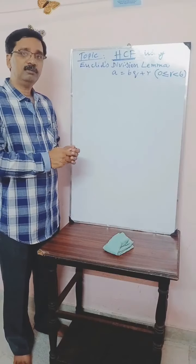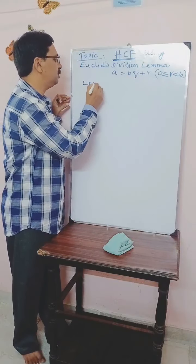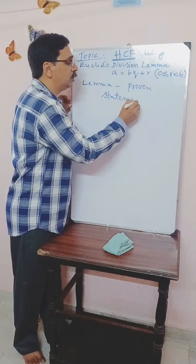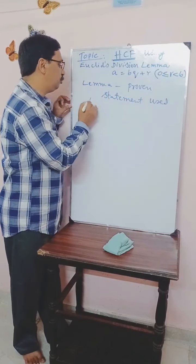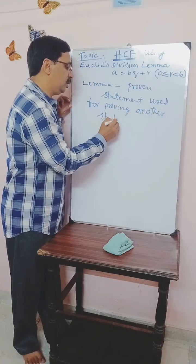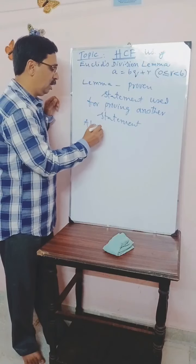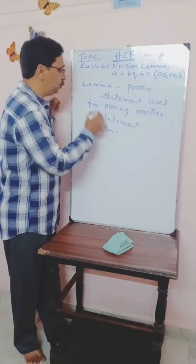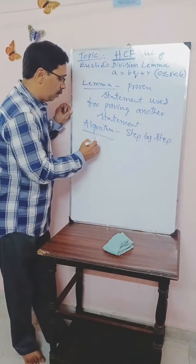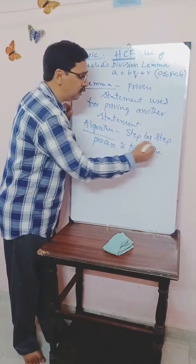Now we have to learn about two more important things here. One is lemma. Lemma is a proven statement used for proving another mathematical statement. Next, today we use a new word called algorithm. Algorithm is simple to understand — it is a step-by-step process to find the solution of a problem.